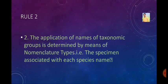Rule number 2 states that the application of names of a taxonomic group is determined by means of nomenclature types. This means that when assigning a name, we must have a type specimen associated with each species. A specimen is a plant collected and preserved to serve as the basis for classification.